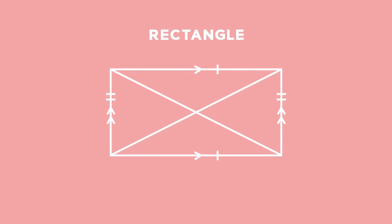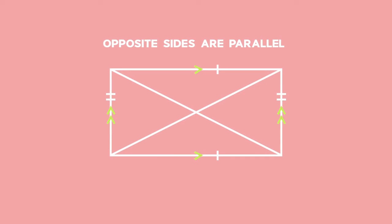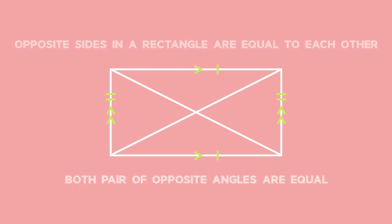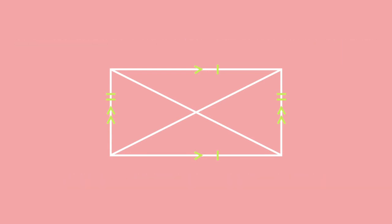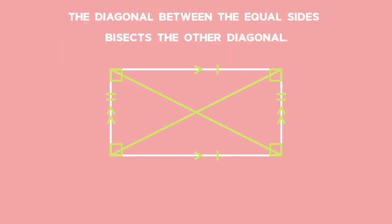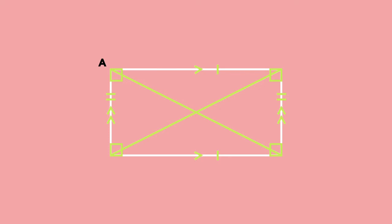Another special type of quadrilateral which is also a parallelogram is a rectangle. A rectangle has the following properties: both pairs of opposite sides are parallel, and the opposite sides in a rectangle are equal to each other. Both pairs of opposite angles are equal, and all the interior angles are equal to 90 degrees. The diagonals bisect each other, and a special property of a rectangle is that the entire diagonal AC is equal in length to the other diagonal BD.